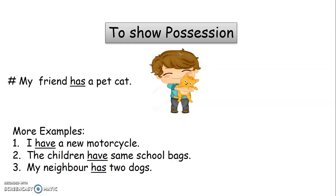Let's see more examples. 'I have a new motorcycle.' Here, 'I' is treated as plural, so we make use of 'have'. Have shows what the person possesses, that is a motorcycle. Second, 'The children have the same school bag.' Here, 'children' is a plural noun, so we make use of the verb 'have'. Have shows what the children possess, that is the same school bag.